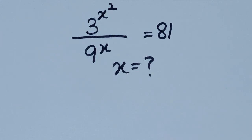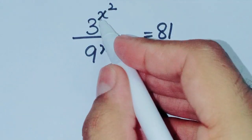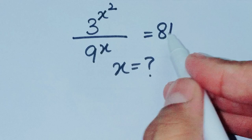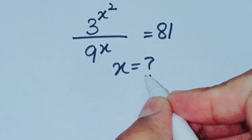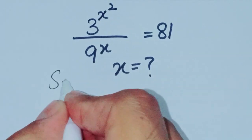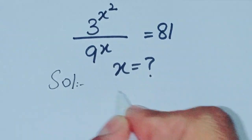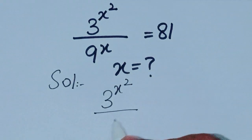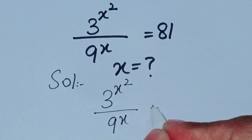Assalamu alaikum, I hope you are all fine. Today I am going to solve a very interesting question. The question is: 3 power x times x squared over 9 power x is equal to 81 — find x. So let's start the solution.